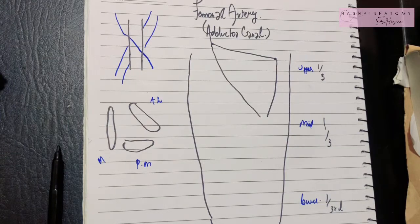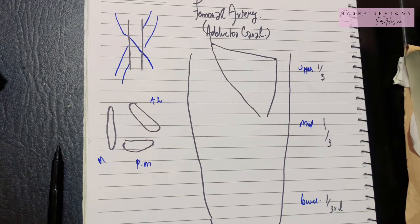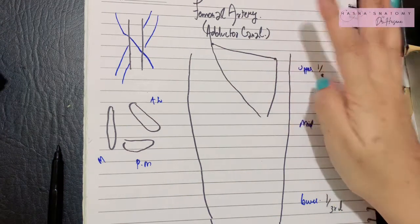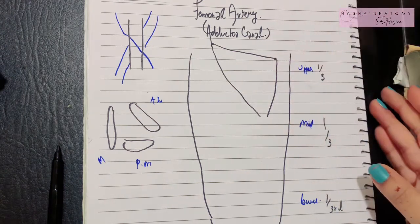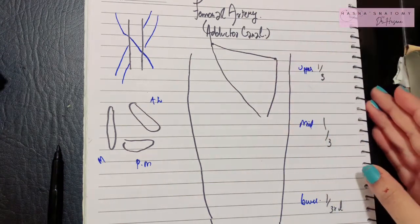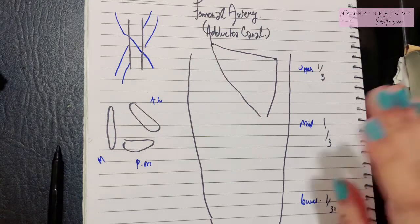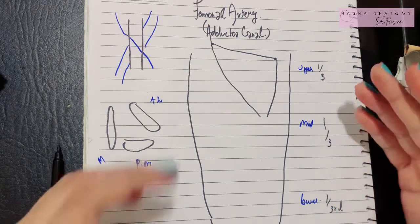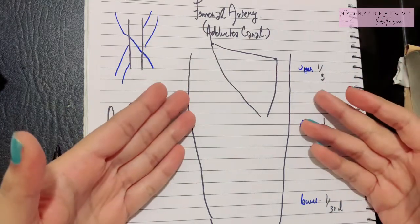Assalamu alaikum, this is Dr. Hasna with Hasna's Anatomy. Today we're going to continue our front of the thigh series by talking about the adductor canal and the femoral artery. Let me give you a brief overview.